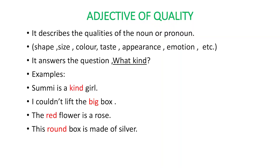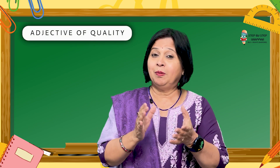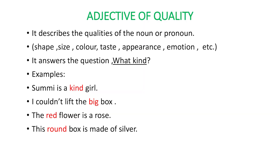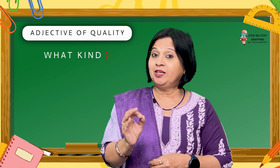The first adjective is adjective of quality. It describes the shape, the size, the color, the feel, and many other things about a noun or a pronoun. As you can see in the examples, we talk about 'Sumi is a kind girl' — what girl? Kind. These adjectives answer the question 'what kind?' — big box for size, red flower for color, and round box for shape. So these will always answer the question: what kind?